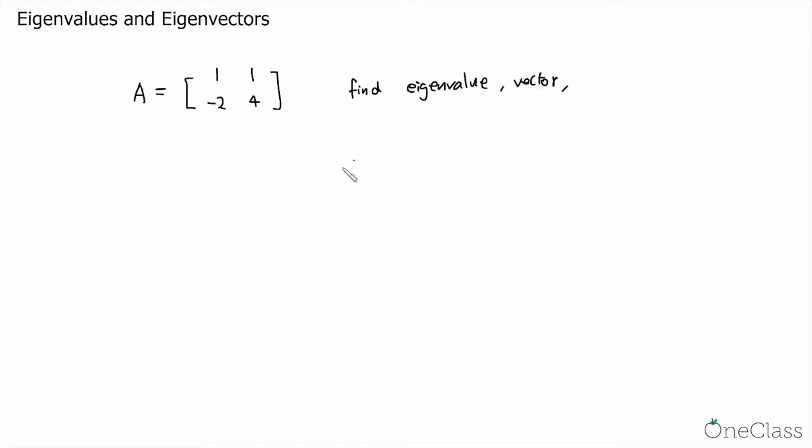As discussed in the concept video, the first step is always to find the characteristic polynomial. And to do so, we have to use the determinant of lambda I2 minus A, which is equal to the determinant of lambda minus 1, minus 1, 2, lambda minus 4.